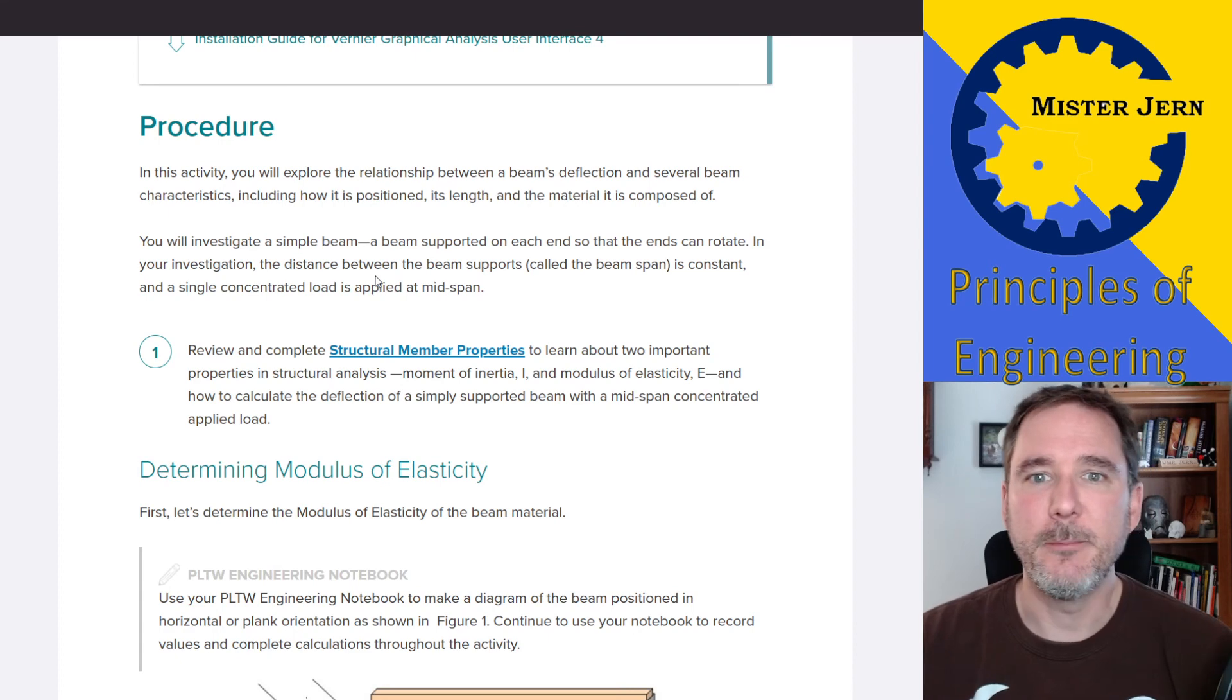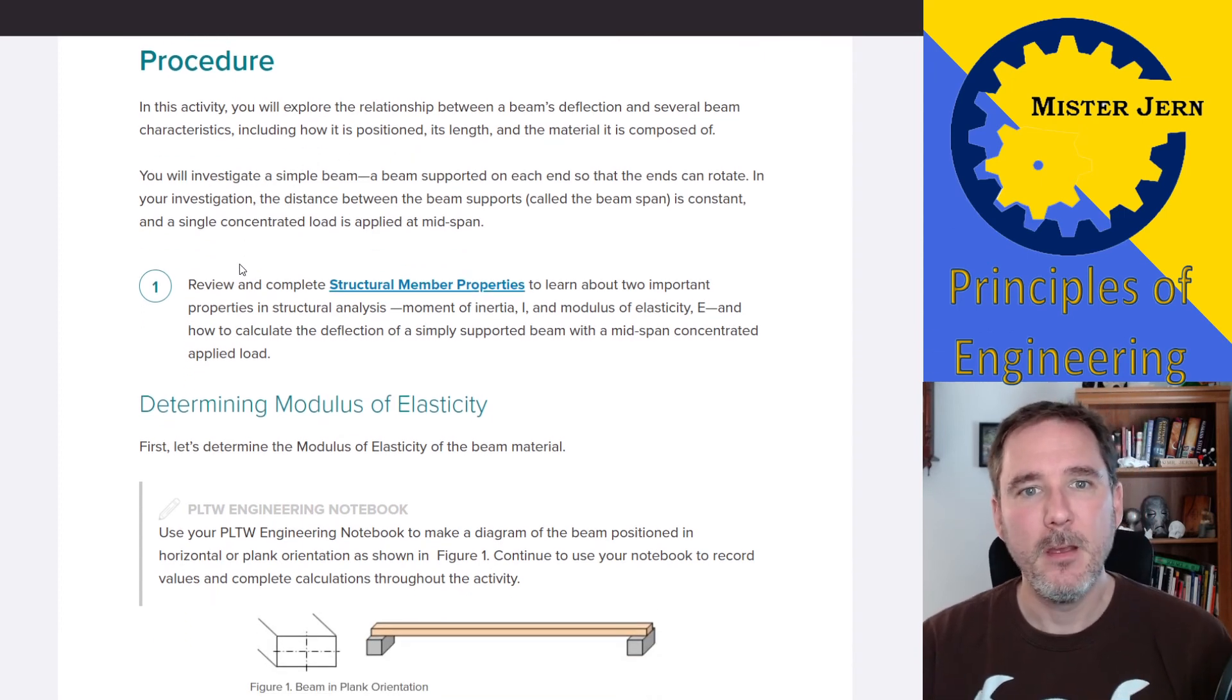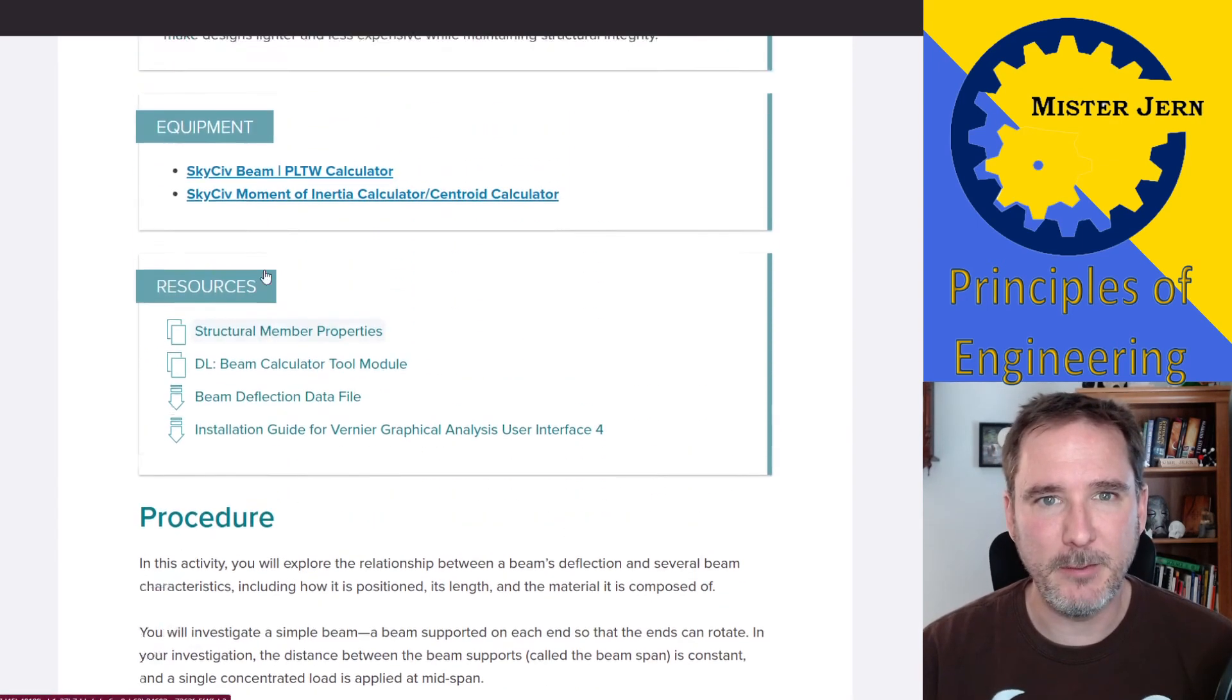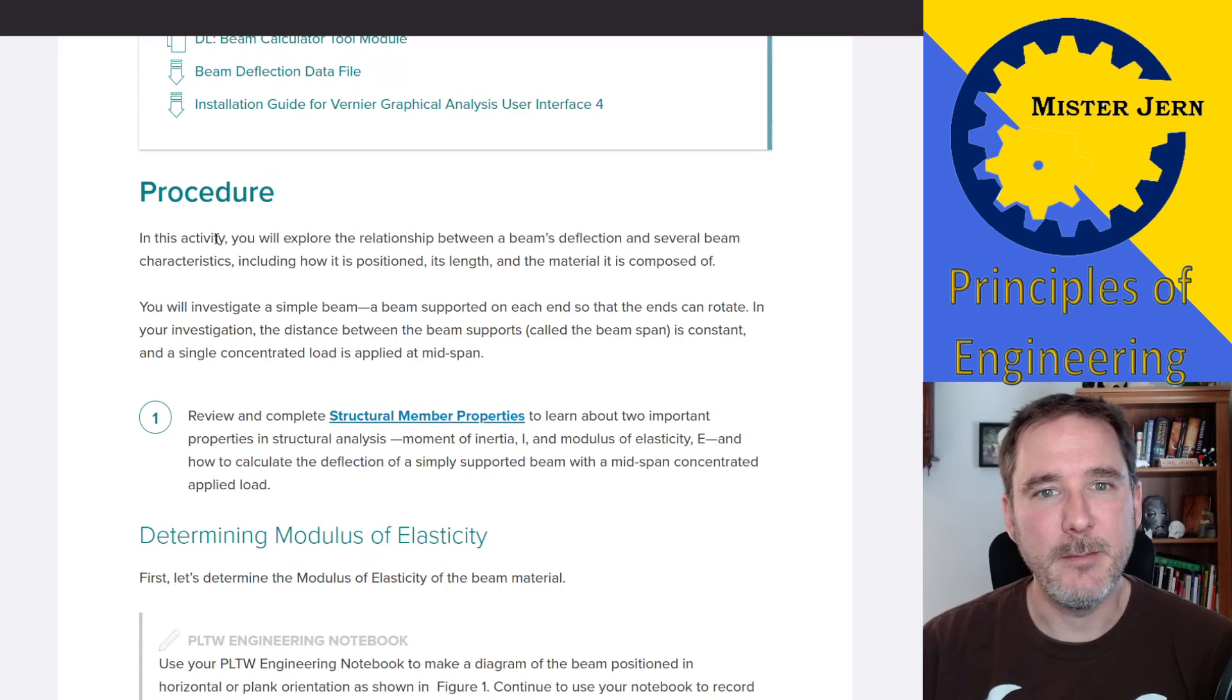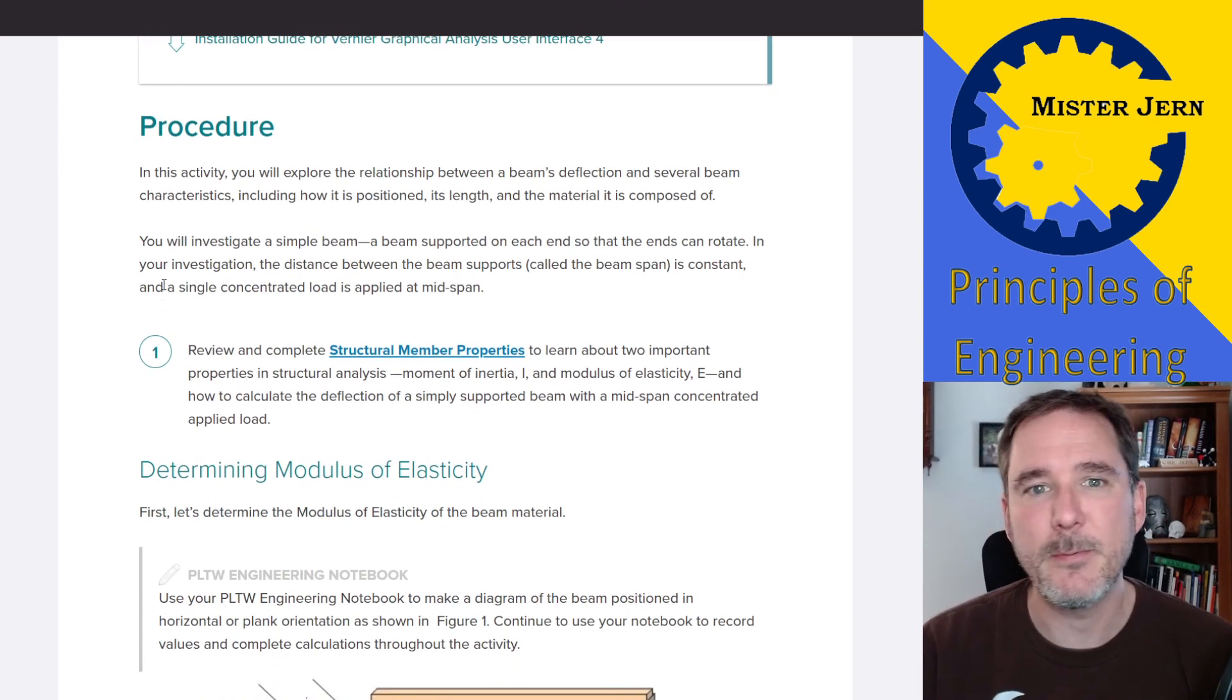Down to the procedure. You're going to look at a beam's deflection and several beam characteristics: how it's positioned, its length, and the materials that it's composed of. So let's start with section one. In your engineering notebook, you'll hopefully have written down some of these, just a brief introduction. You don't have to copy this or anything, but summarize it. And then you get into the procedures. So make sure you write procedures, and then there's several steps involved here.